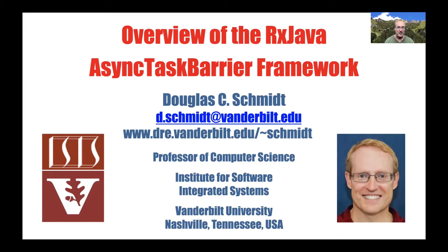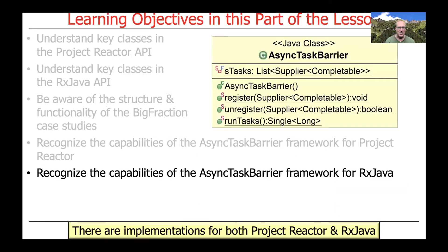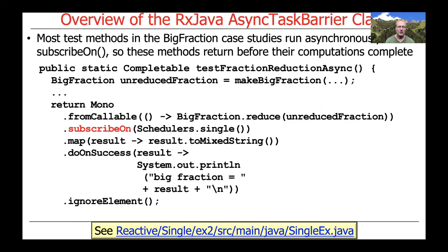Now that we've covered the async task barrier implementation based on Project Reactor, let's talk briefly about the async task barrier framework provided for RxJava. The API is essentially the same with a few tweaks to deal with the fact that RxJava and Project Reactor don't have equivalent type systems, but the basic features, capabilities, and motivation are the same.